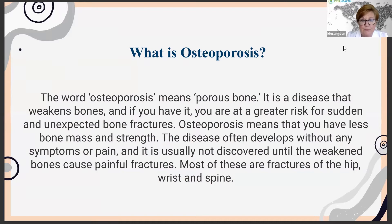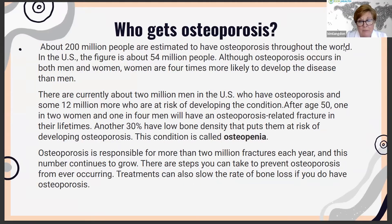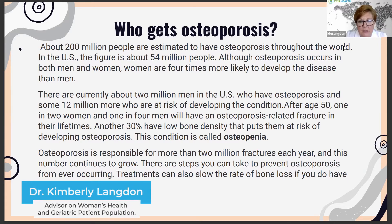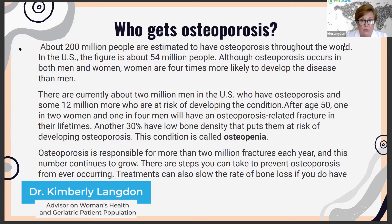So who gets osteoporosis? Well, a lot of people get osteoporosis. It's more common after the age of 50, and it's more common in women, but men can get this as well. Osteoporosis is the disease state, whereas osteopenia is sort of the early stages or the thinning of the bones — not quite too porous — but osteopenia does lead to osteoporosis. Osteoporosis is responsible for 2 million fractures each year, and this number continues to grow.